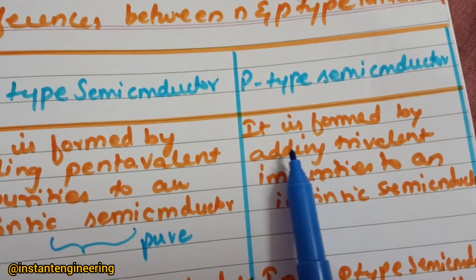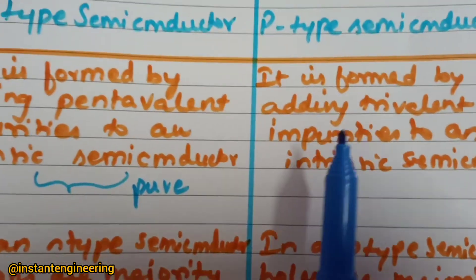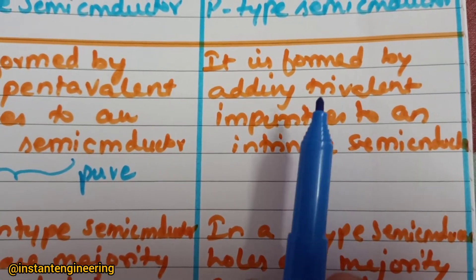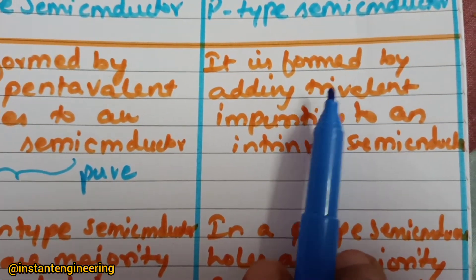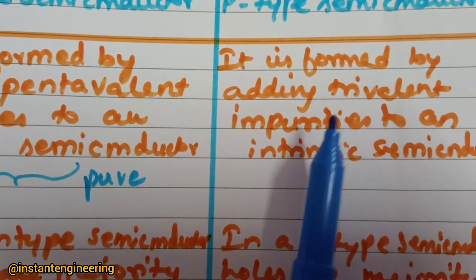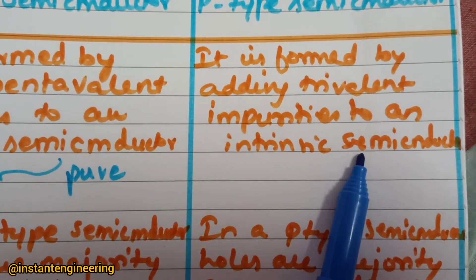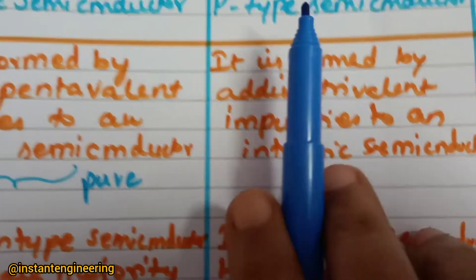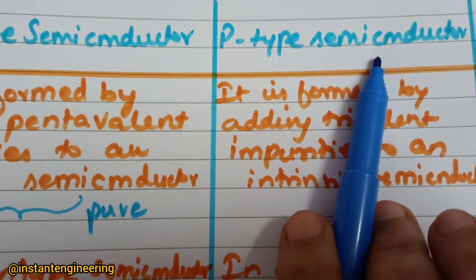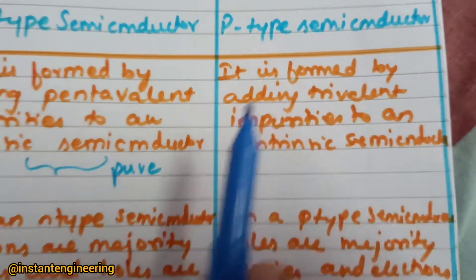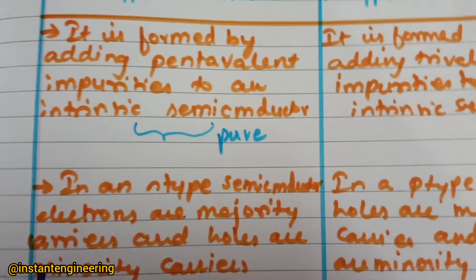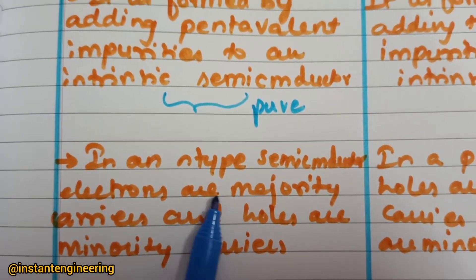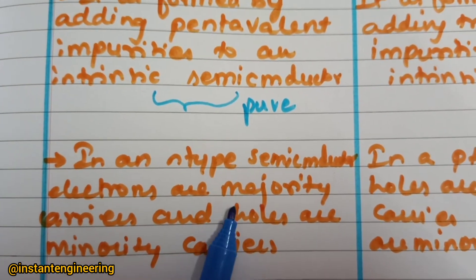Similarly, p-type is formed by adding trivalent impurities — trivalent means three valence electrons. If you add that to this pure semiconductor, the p-type semiconductor is formed.